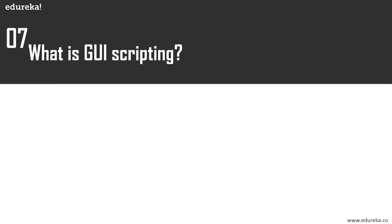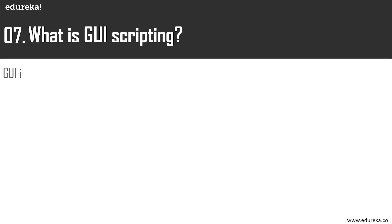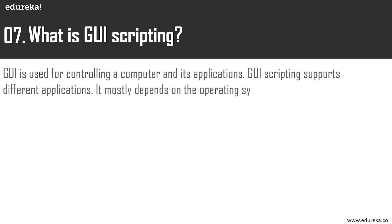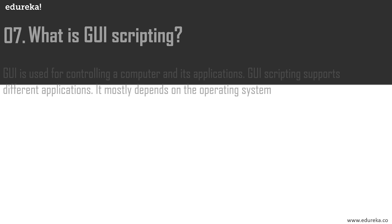What is GUI scripting? When we talk about Linux, we mostly talk about CLI or command line interface scripting, but there is also something known as graphical user interface scripting, which is used for controlling a computer and its applications. GUI scripting supports different applications which mostly depend on the OS.